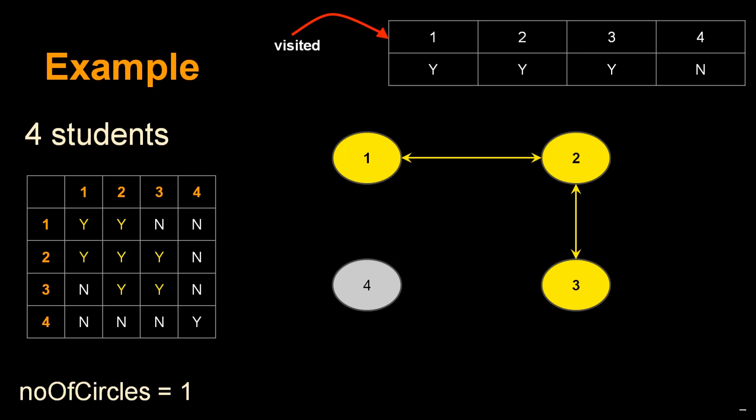Since student 2 has no more unvisited friends, we return to student 1. Student 1 also has no more unvisited friends, so we're done finding all friends in student 1's circle.